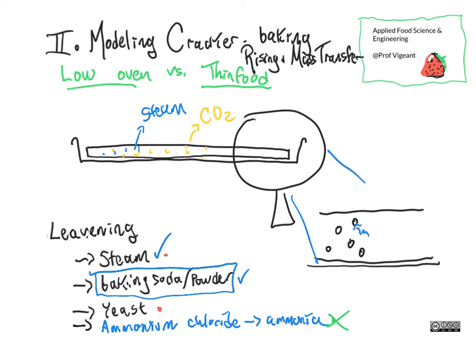As we put this into the oven, steam forms and it's looking for a way out of the system. Steam can move into a variety of places: it can end up in the tiny little bubbles making them bigger, which makes a lighter and airier product. But if we get too much water in there, it'll be wet inside, which means our cracker won't be crispy. The steam can just escape through the surface, though maybe not enough of it. And if the water is near the bottom, it can't get out because that's where the cookie sheet is. This brings us to the concept of docking.